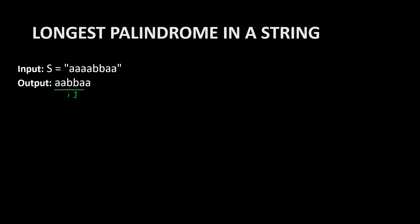i and j are the same here, so we decrement i. Now i will be here and j will move forward. We check left and right side — both are the same. Again, i is decremented and j is incremented. A and A are both the same. After that, i is decremented and j is incremented, and both will go out of bounds — we ignore that. So AABBAA is a palindrome, and that is the biggest one. This is the method for checking the even case.